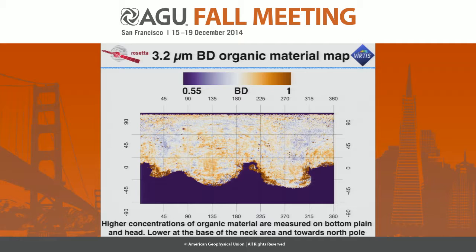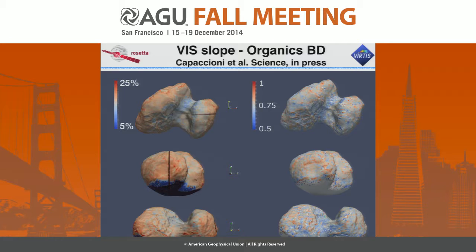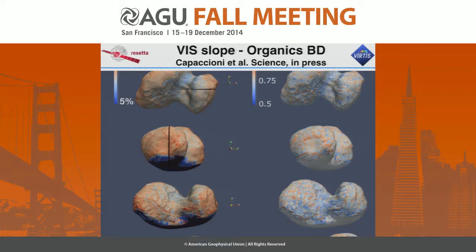Concerning the band depth of the 3.2 micron organic feature, we observe higher values on the south plane, the bottom of the surface, and on the head, while the minimum band depth is seen in the active neck area and toward the north pole. We reprojected this data onto the real shape model — showing the visible slope alongside the organics band depth. You can see that where the slope is lower, in the blue region of the neck, we also have lower organics values, with some additional variability across the rest of the surface.